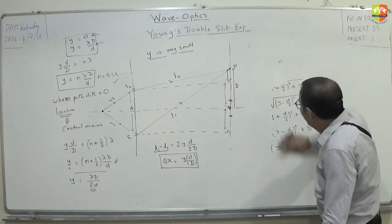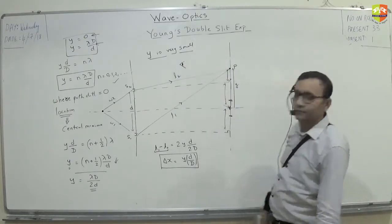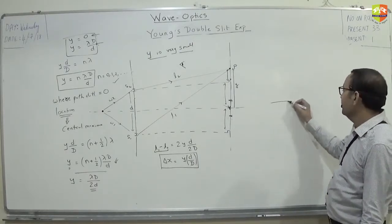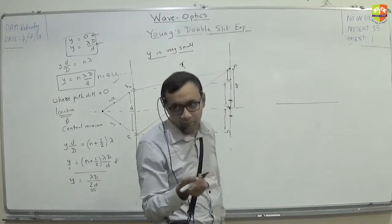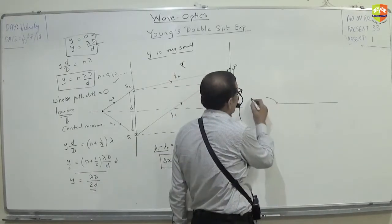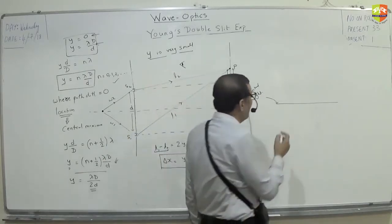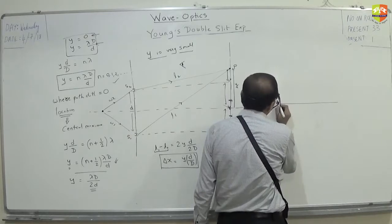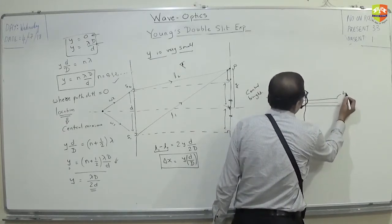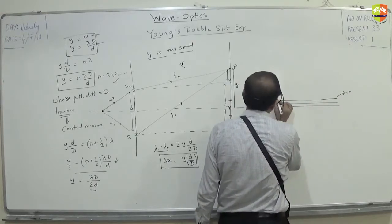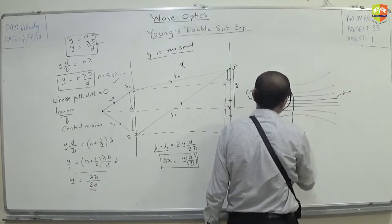Now see how the fringes will be formed. Suppose you are looking from this side and watching the screen. At the center, it will be bright — very bright. Then you will have a dark region after this, and then there will be a location where you have bright again. This is the first bright, this is the center bright, then the second, and slowly it will start taking curves as you move away.